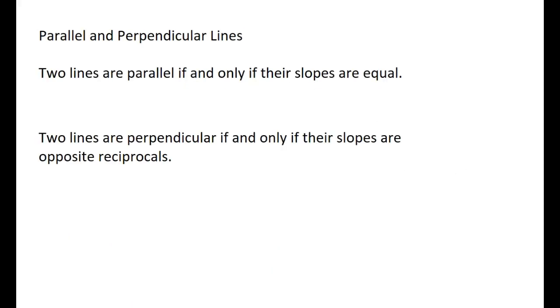Finally, let's talk about parallel and perpendicular lines. Two lines are parallel if and only if their slopes are equal. You have to have the same slope for them to be parallel. Two lines are perpendicular if and only if their slopes are opposite reciprocals. So let's say that I have one equation where y = 2x + 3, and another one where y = -1/2x - 5. Since 2 and -1/2 are opposite reciprocals, these lines are perpendicular.